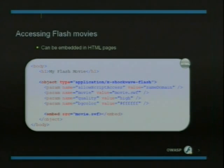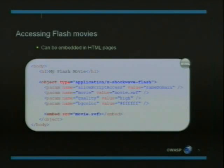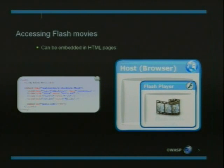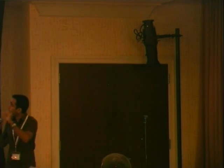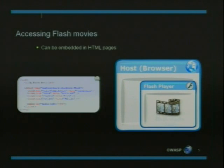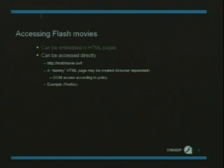There are actually two ways someone can place Flash applications inside their application. The first way is by embedding it inside an HTML page — done as shown in this example, where Flash is embedded as an object tag. When the browser renders this, it analyzes the object tag, allocates a portion of the browser window to host the Flash player, and the Flash player is in charge of everything shown there. The second way is by accessing the Flash file directly.